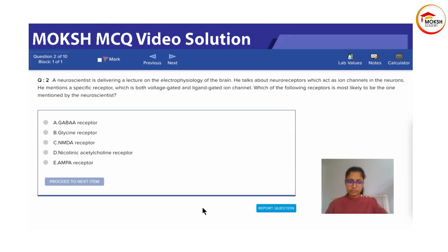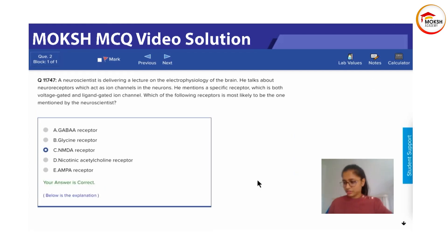The answer is the NMDA receptor. They were asking which ion channel is both ligand and voltage-gated. Basically these ion channels can be either gated or ungated. Ungated ones are always going to be open, like our potassium channels.